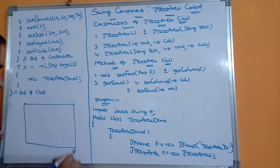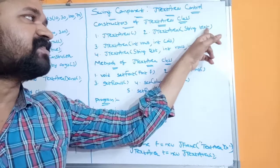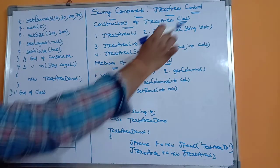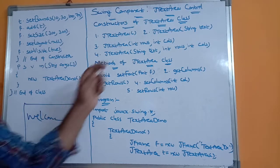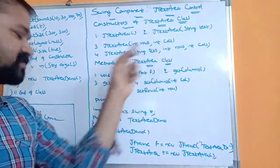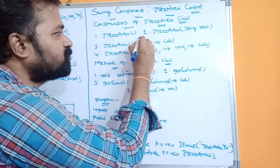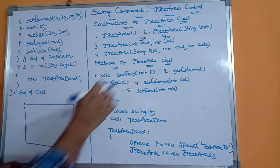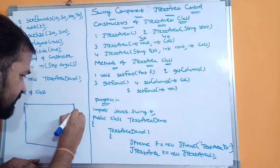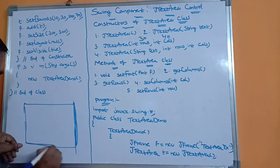The first constructor creates a multiline text box with no text — initially nothing will be displayed. The second, JTextArea(String text), creates a multiline text box with the specified text; for example, if we enter 'welcome', then 'welcome' will be displayed initially. The third constructor takes two integer values for rows and columns; for example, JTextArea(30, 40) creates a text area with 30 rows (height) and 40 columns (width).